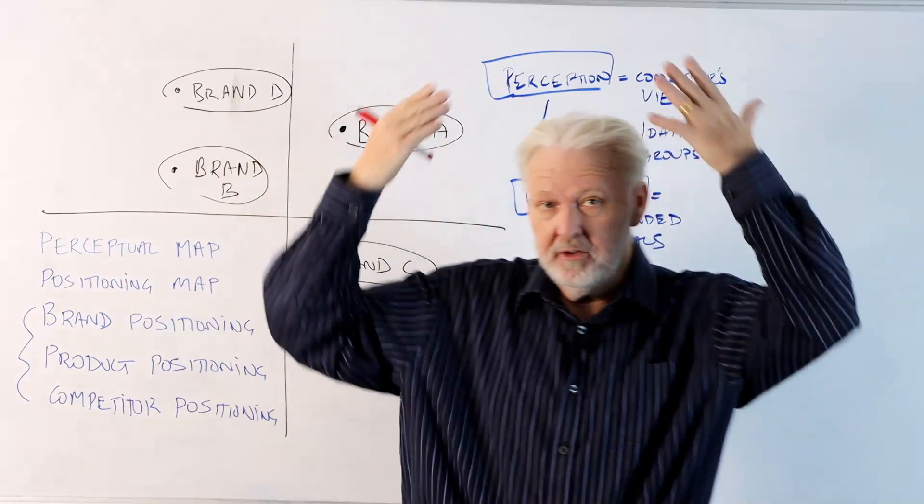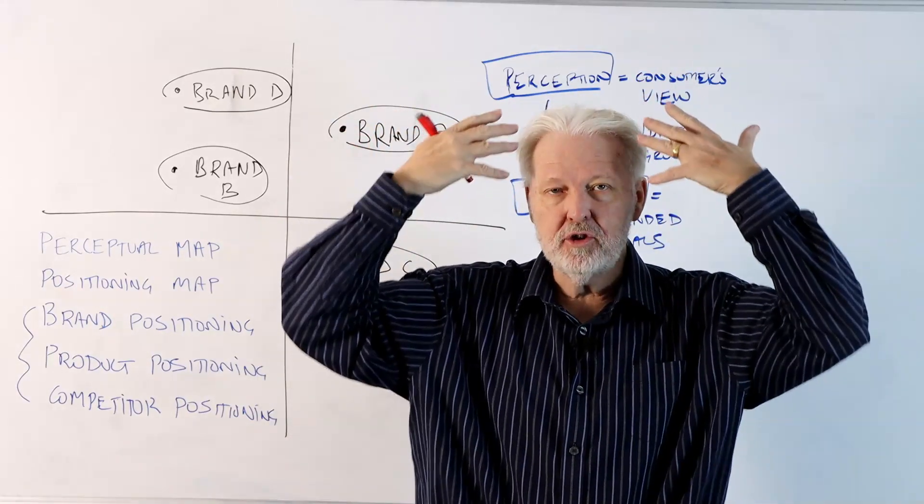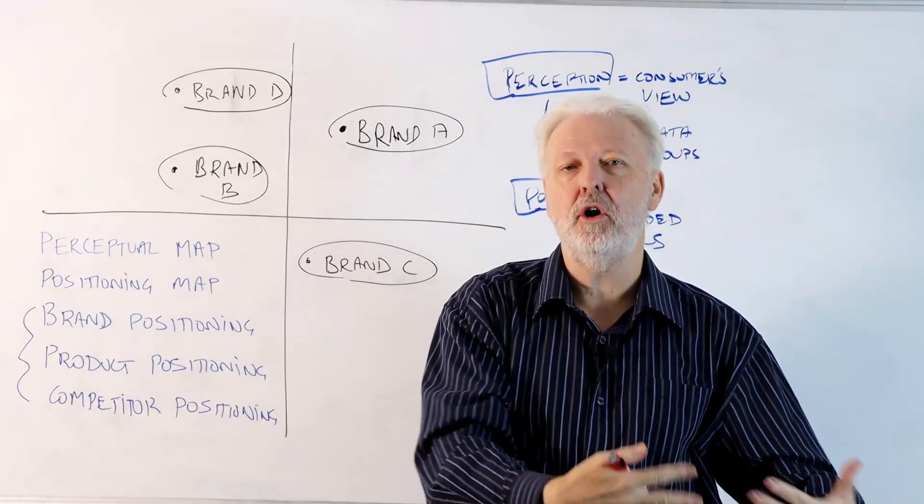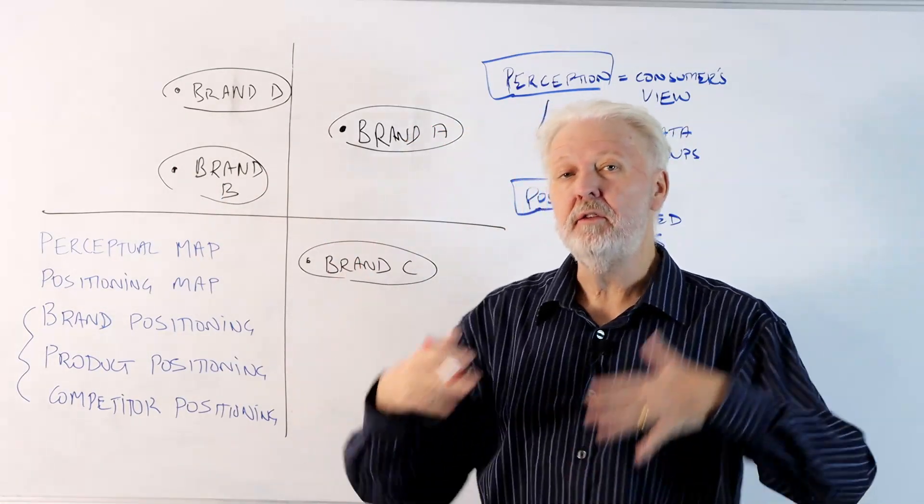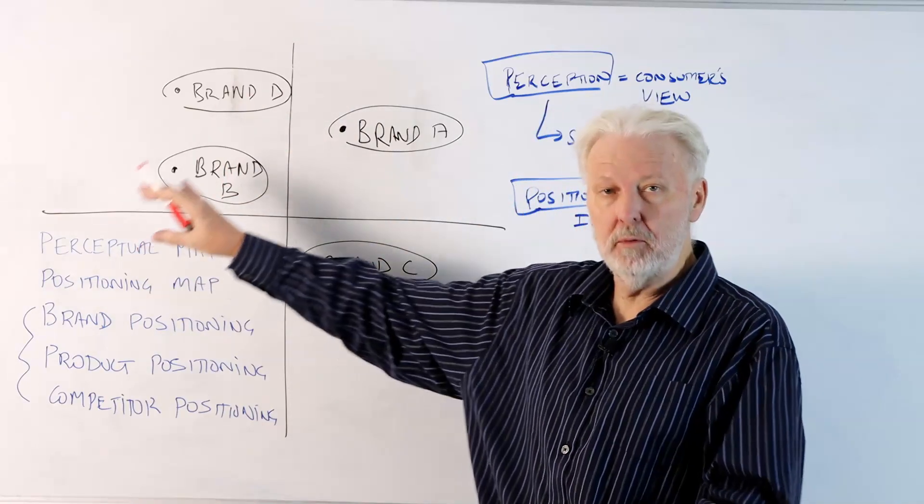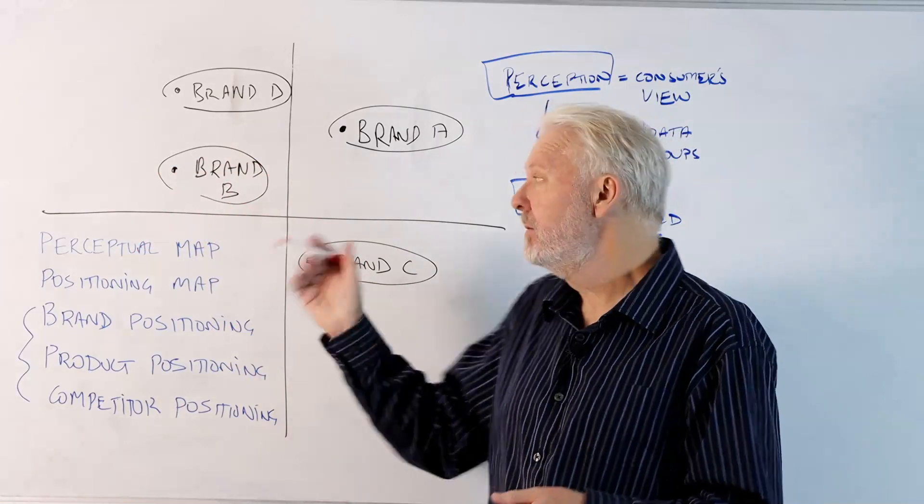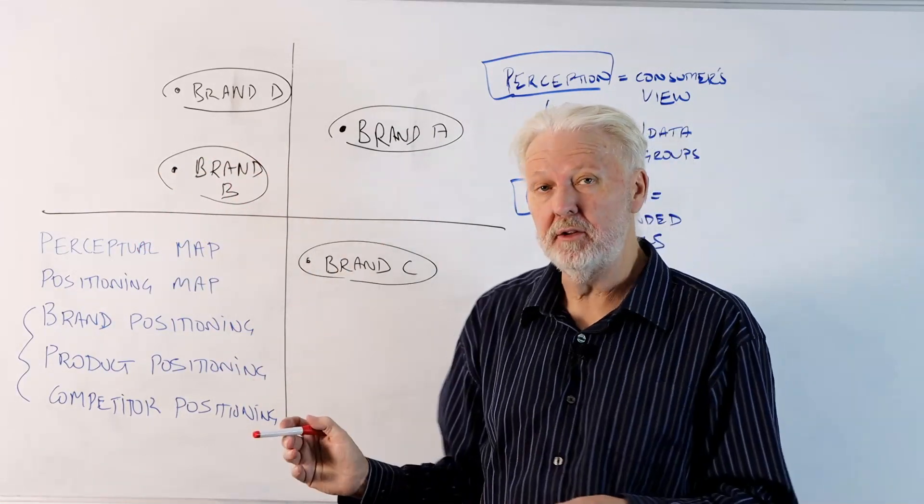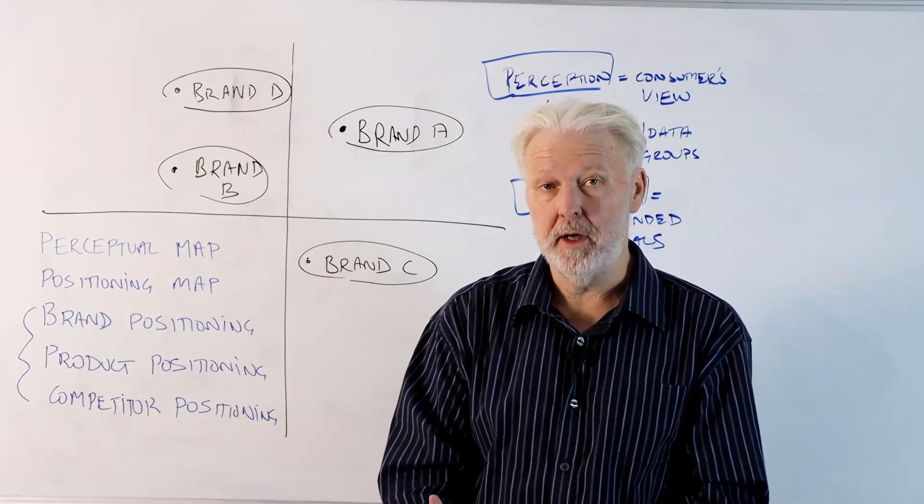What we're concerned about is how the brands are actually perceived in the minds of the consumer. A perceptual map essentially takes out the thinking and the brand structure and places it on a two-dimensional page for us to understand the views of consumers. So we would look at the overall market, we would look at key segments, and we would drill down to even niche segments to see how they understand the brands. So that's a perceptual map if it's based on consumer data.